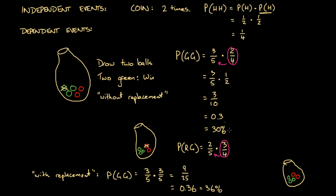Notice that the outcome without replacement was 30%, which is different from the same game with replacement giving 36%. With replacement makes these events independent — the second event is not dependent on the outcome of the first. Whereas for dependent events, at least one event's probability in the experiment is dependent on another event in the experiment. Watch out for that when doing questions.